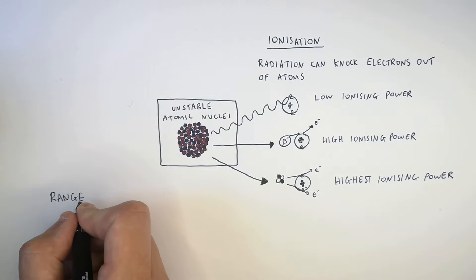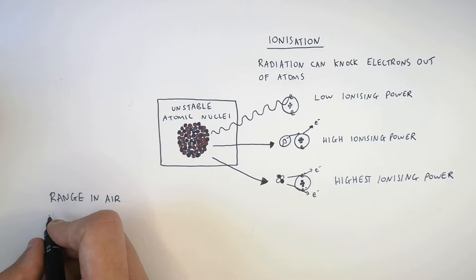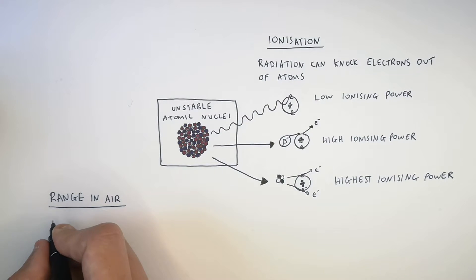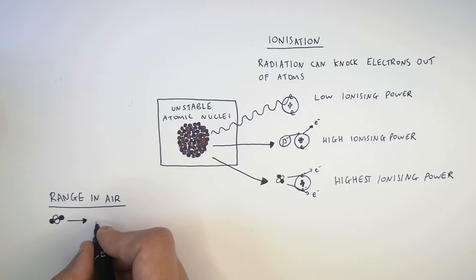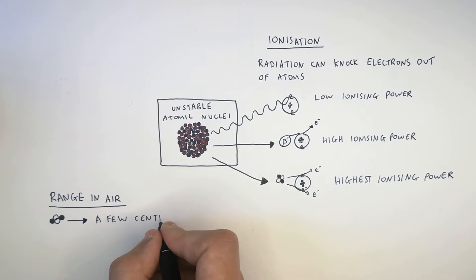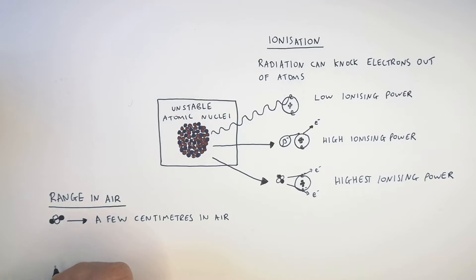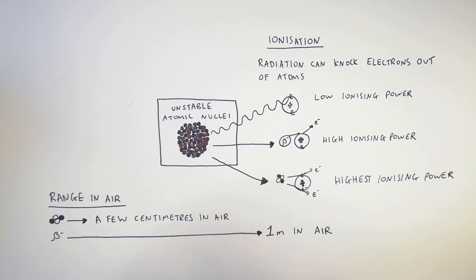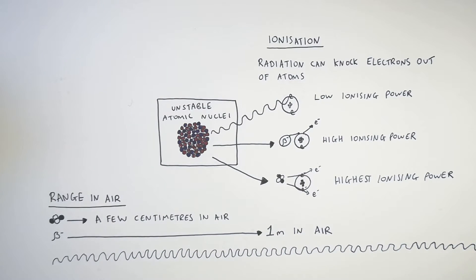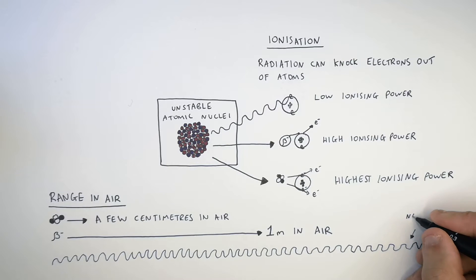Now let's look at the range in air — how far each type can travel. Alpha particles only travel a few centimeters in air; a few centimeters of air will stop them. Beta particles, the fast-moving electrons, can travel up to one meter in air — much further than alpha particles. However, gamma rays have a near unlimited range in air and will travel a very long distance before their energy is dissipated.